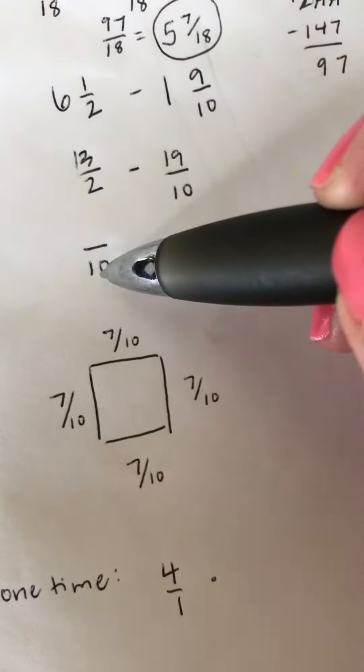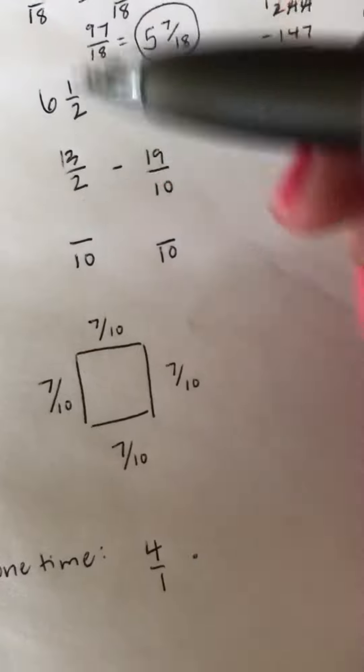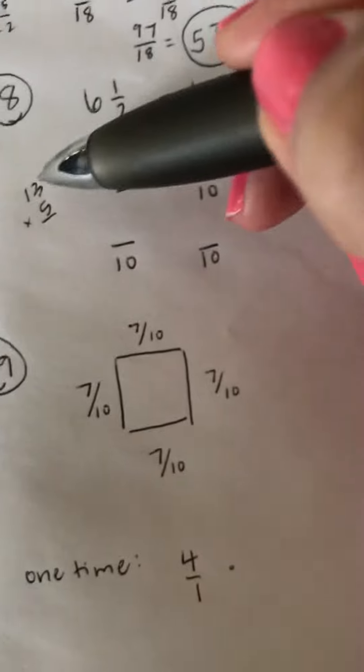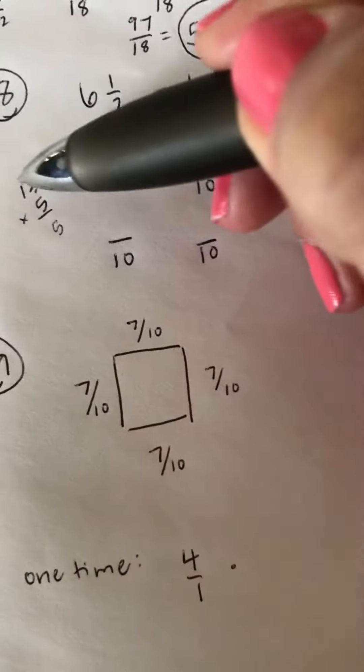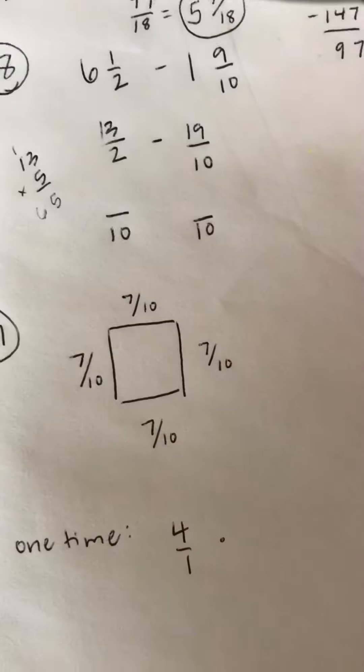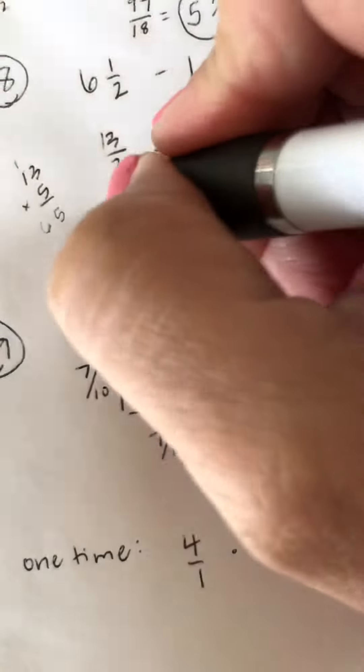All right, 2 times 5 is 10. So 13 has to change at the same rate. 13 times 5 is 65, but just to show you, 3 times 5 is 15. Carry the 1. 1 times 5 is 5, plus 1 will be 6. So 13 times 5 is 65.